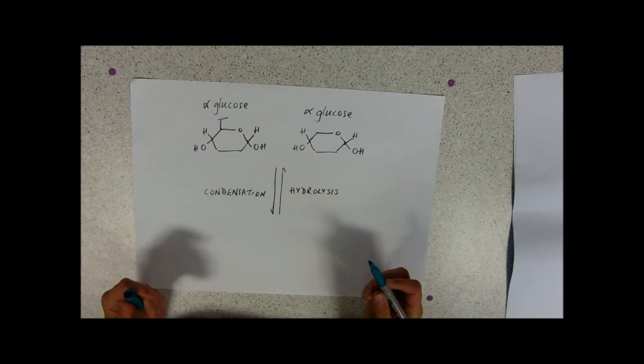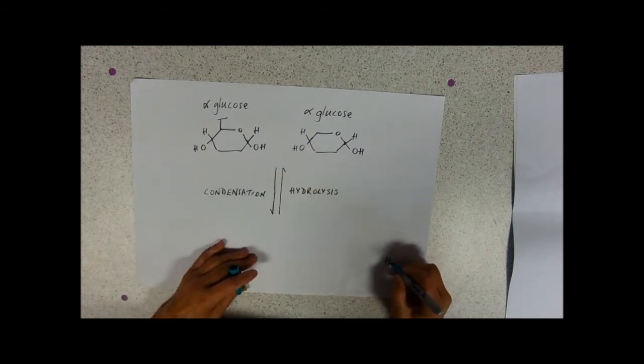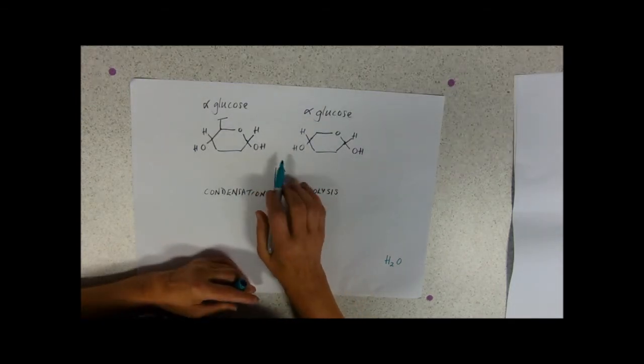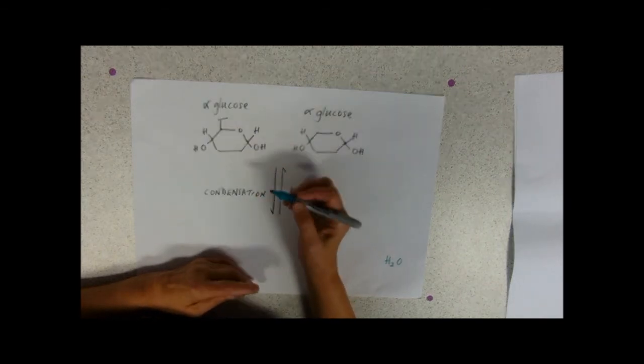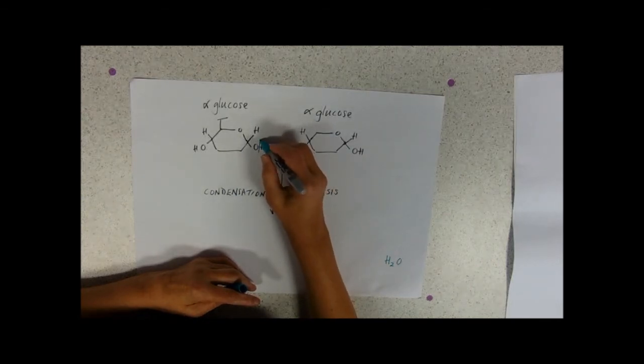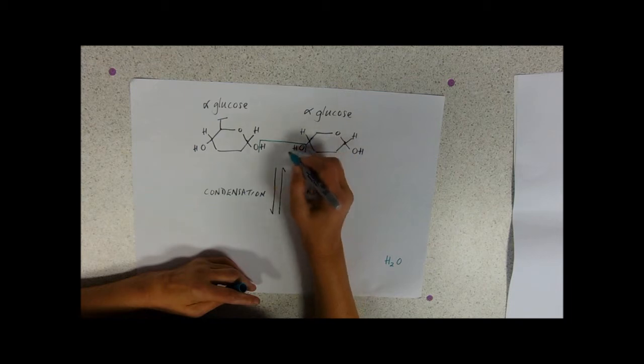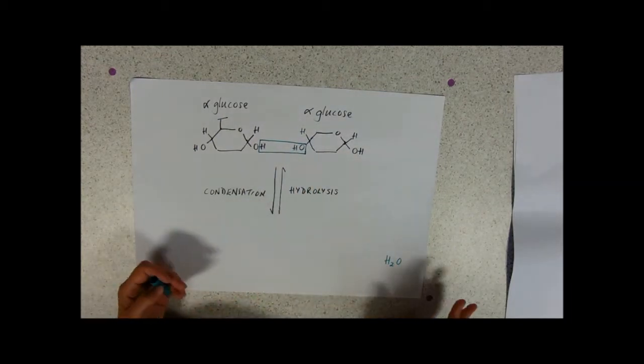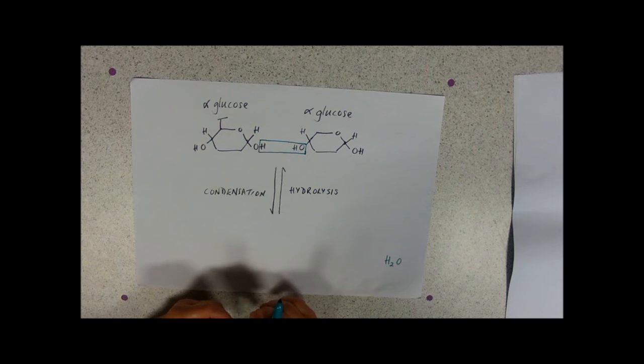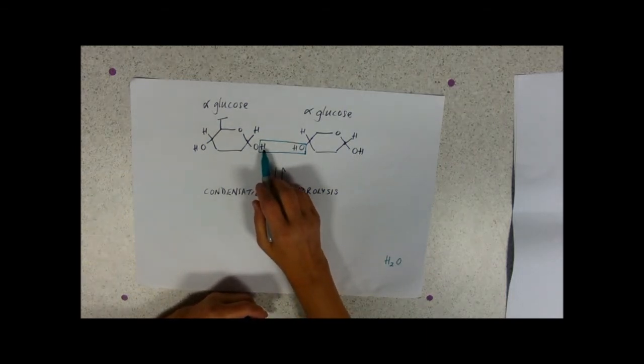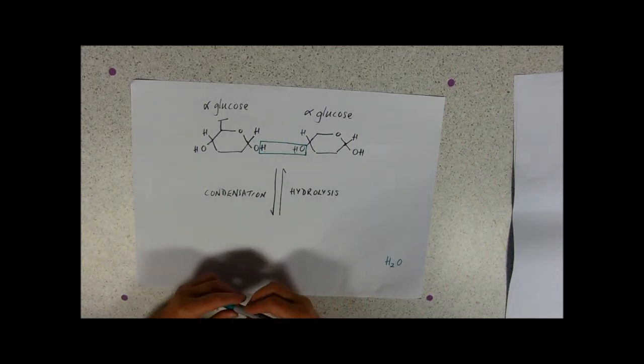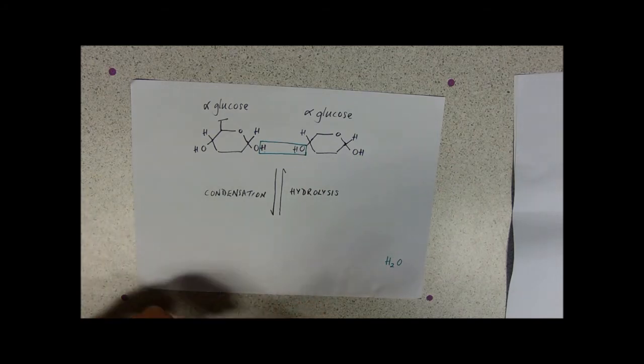In condensation, we take out water. What do we need to make water? We need H2O. The most reactive groups are the hydroxyl groups. Carbon will not let go of hydrogen if it can possibly avoid it, so it's always a reaction between two hydroxyl groups. Here we've removed hydrogen, hydrogen, oxygen, hydrogen, hydrogen, hydrogen, oxygen. That's where the water comes out.